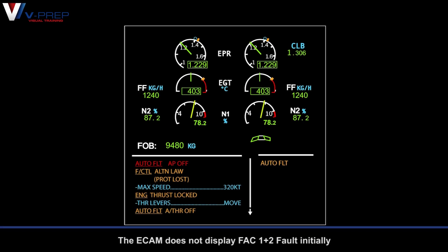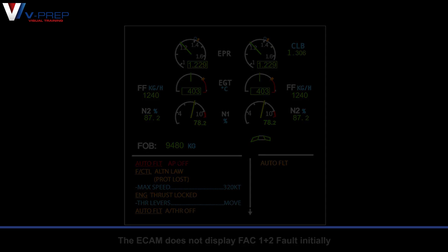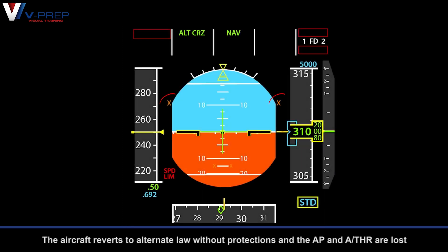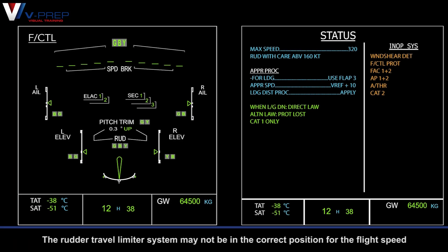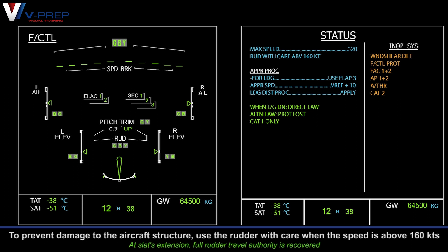The ECAM does not display FAC 1 and 2 fault initially. The aircraft reverts to alternate law without protections, and the autopilot and autothrust are lost. The rudder travel limiter system may not be in the correct position for the flight speed. To prevent damage to the aircraft structure, use the rudder with care when the speed is above 160 knots.